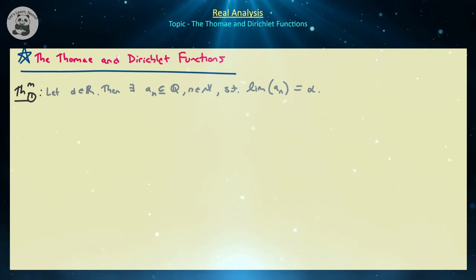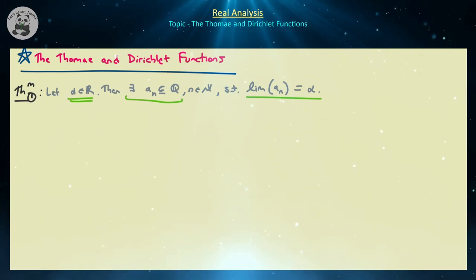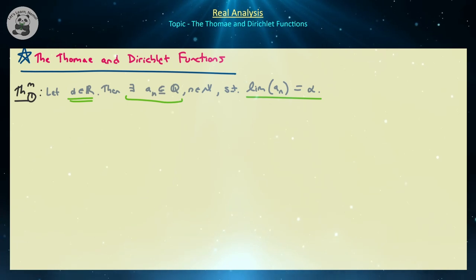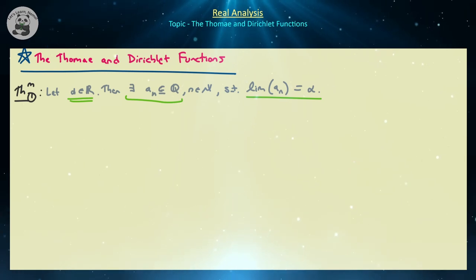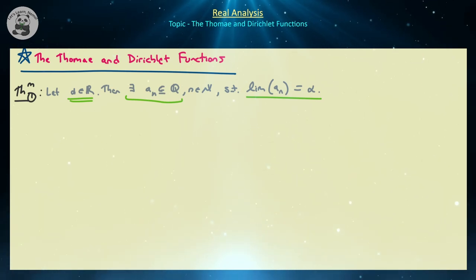The first theorem states the following. Let us assume that a is any real number. Then there always exists a sequence of rational numbers that converge to that real number. So regardless of how crazy this real number might be — whether it be the square root of 2, pi, e to the power of pi divided by the square root of 2 — we can always construct a sequence of rational numbers, just fractions of integers, that converge to this real number.